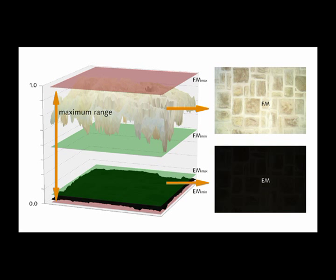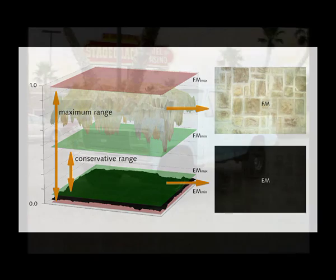The area between the red planes represents the maximum range in which compensation is possible, but depending upon the input image, clipping may occur. The area between the green planes represents the conservative range, where every input image can be compensated without clipping.